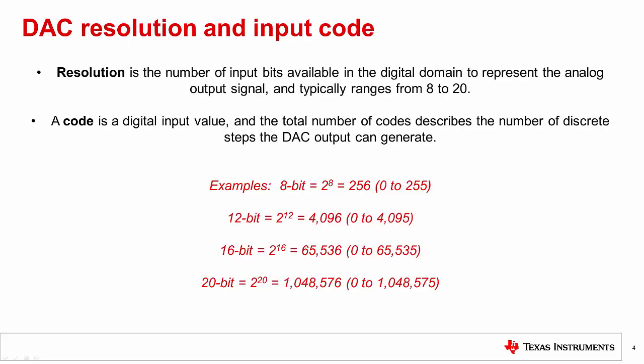Now let's define some key terms that you'll see commonly associated with precision DACs. The first of which is resolution. Resolution is the number of input bits available in the digital domain to represent the analog output signal. Typically this ranges between 8 and 20 bits.